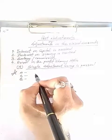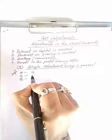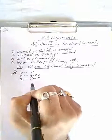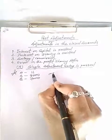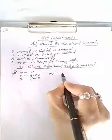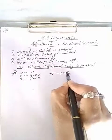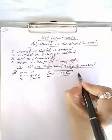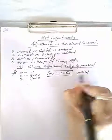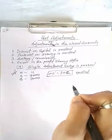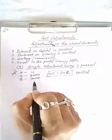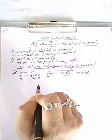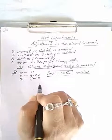They have fixed capital — suppose one lakh, eighty thousand and seventy thousand. The question says interest on capital at the rate of 10 percent has been omitted, meaning no interest on capital has been given to the partners. Now we will rectify it by passing a single adjustment entry.